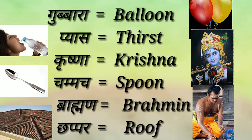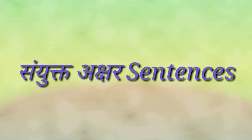Gubbara — Balloon. Piaas — Thirst. Krishna — Krishna. Chammach — Spoon. Brahman — Brahmin. Chappar — Roof. Now we will see some Sanyukta sentences.